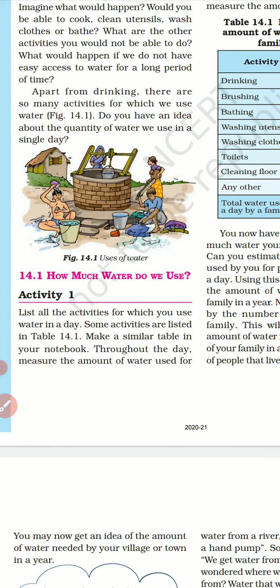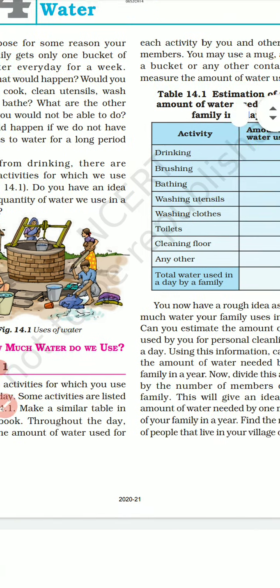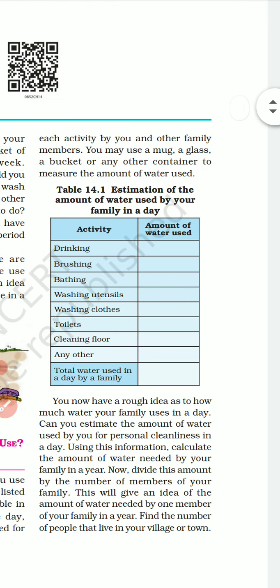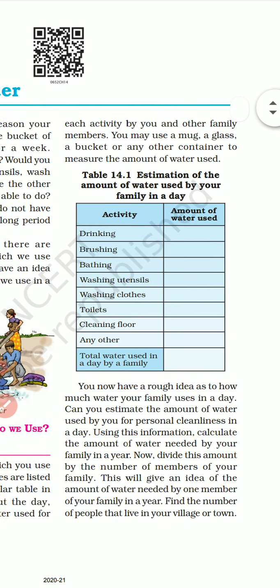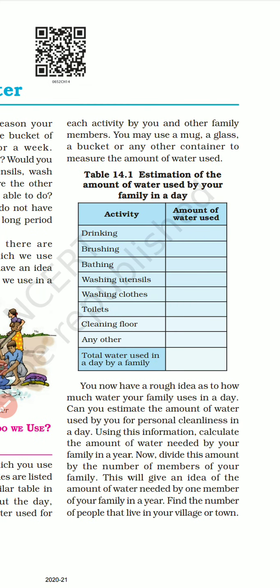Activity number one: list all the activities for which you use water in a day. Some activities are listed in Table 14.1 - make a similar table in your notebook. Throughout the day, measure the amount of water used for each activity by you and your family members. You may use a mug, a glass, a bucket, or any other container to measure the amount of water used.